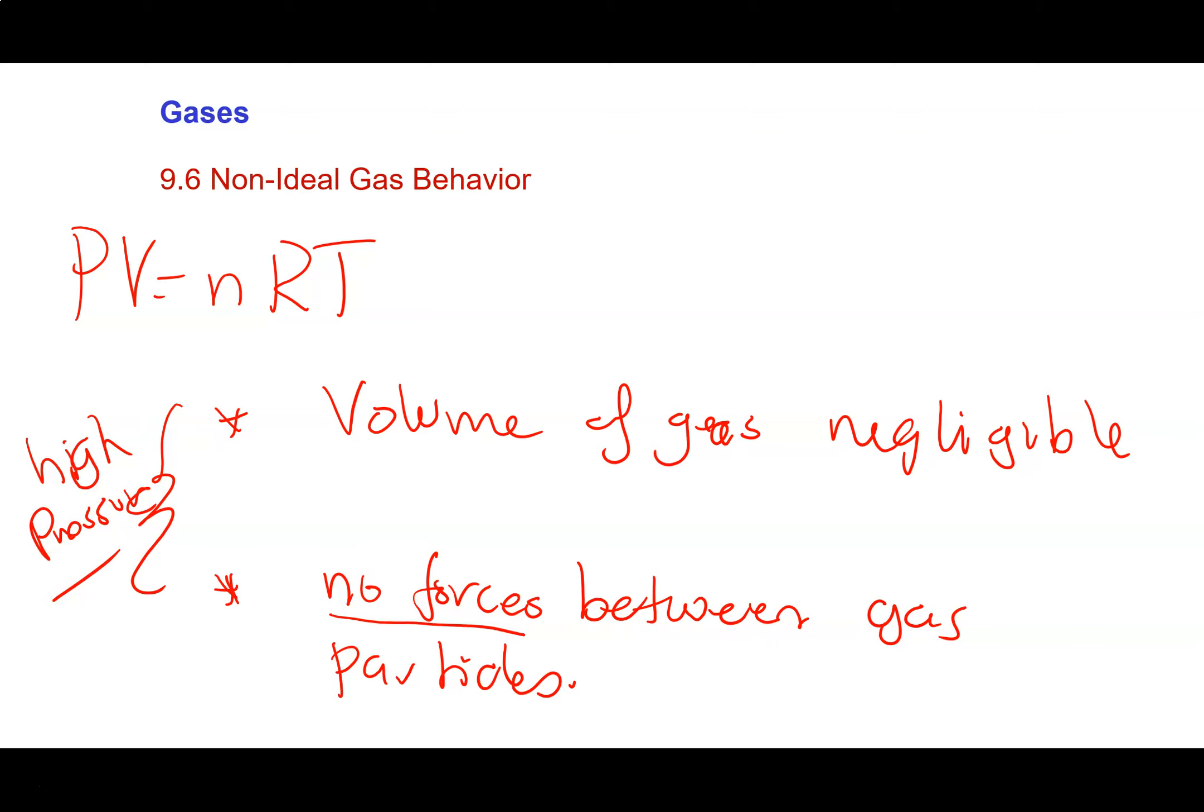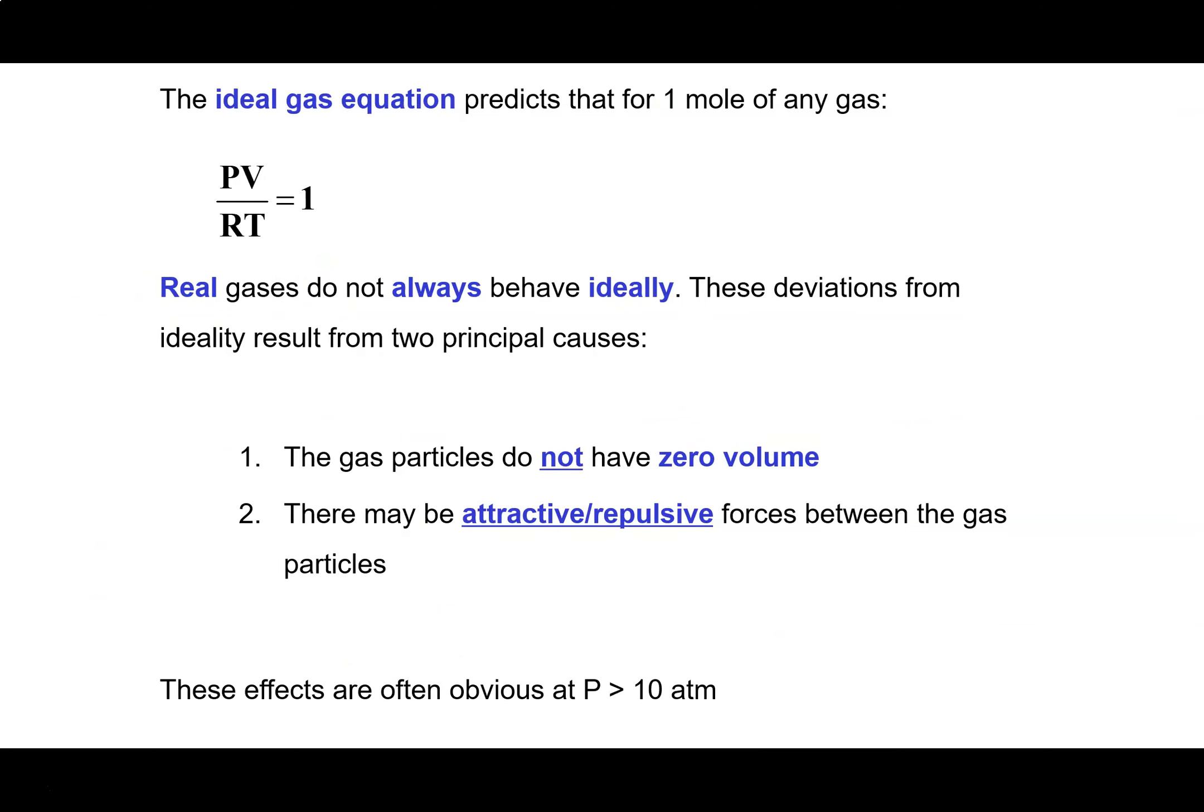We can imagine scenarios where the ideal gas law breaks down. The ideal gas law predicts that for one mole of any gas, PV equals nRT, or PV over RT equals 1. For one mole of gas, if we measure pressure, volume, and temperature and calculate PV over RT, it would always equal 1. But real gases do not always behave in accordance with the ideal gas law—we see deviations due to the two reasons I mentioned.